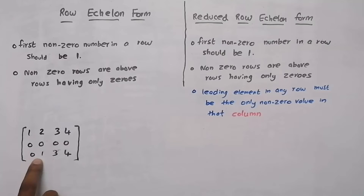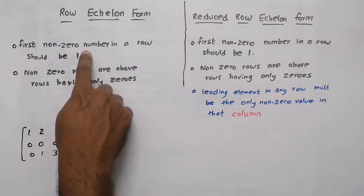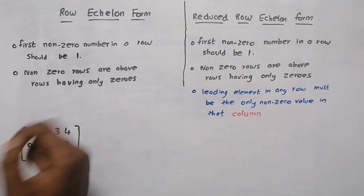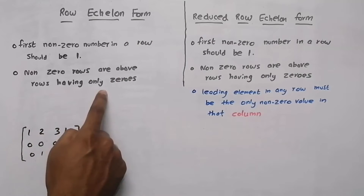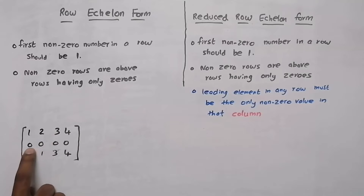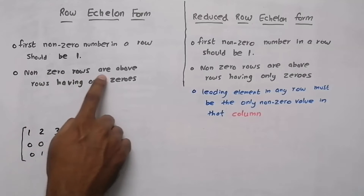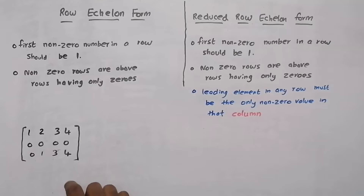Now, in the third row, the first non-zero value — this is 0, this is non-zero. So the first non-zero value should be 1; that condition is also satisfied. Now, the second condition: non-zero rows are above rows having only 0s. This is the row which has only 0, and non-zero rows are above that.